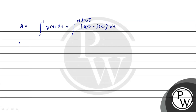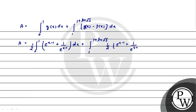So now we have the values. A = ∫(0 to 1) (1/2)(e^(x-1) + e^(1-x)) dx + ∫(1 to 1+ln√3) [(1/2)(e^(x-1) + e^(1-x)) - (e^(x-1) - e^(1-x))] dx. In the second integral, combining: (1/2)e^(x-1) - e^(x-1) + (1/2)e^(1-x) + e^(1-x) = -(1/2)e^(x-1) + (3/2)e^(1-x).